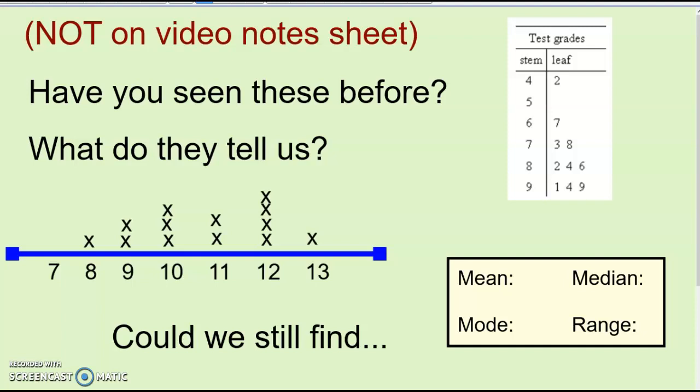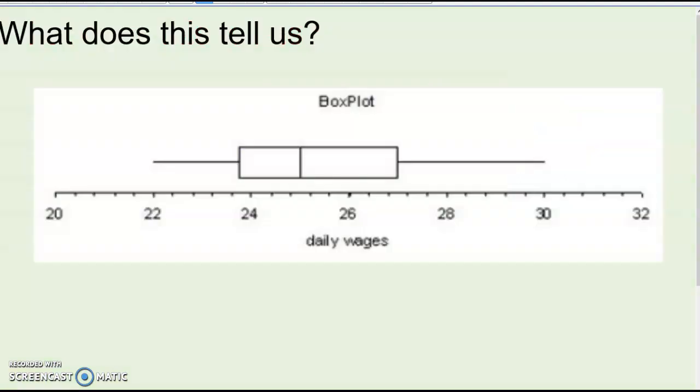Again, this is nothing you need to write down, but I just want to go over that you should have learned about stem and leaf plots before, line plots before. Your data set could look like any of these things. If you remember, this is like 42 and 67 and 73 and 78 - those would be the numbers in your list, and you could still find the mean, median, mode, and range from those. Or your list might be 8, 9, 9, 10, 10, 10, 11, 11. You could have your list in different formats and still find these things.